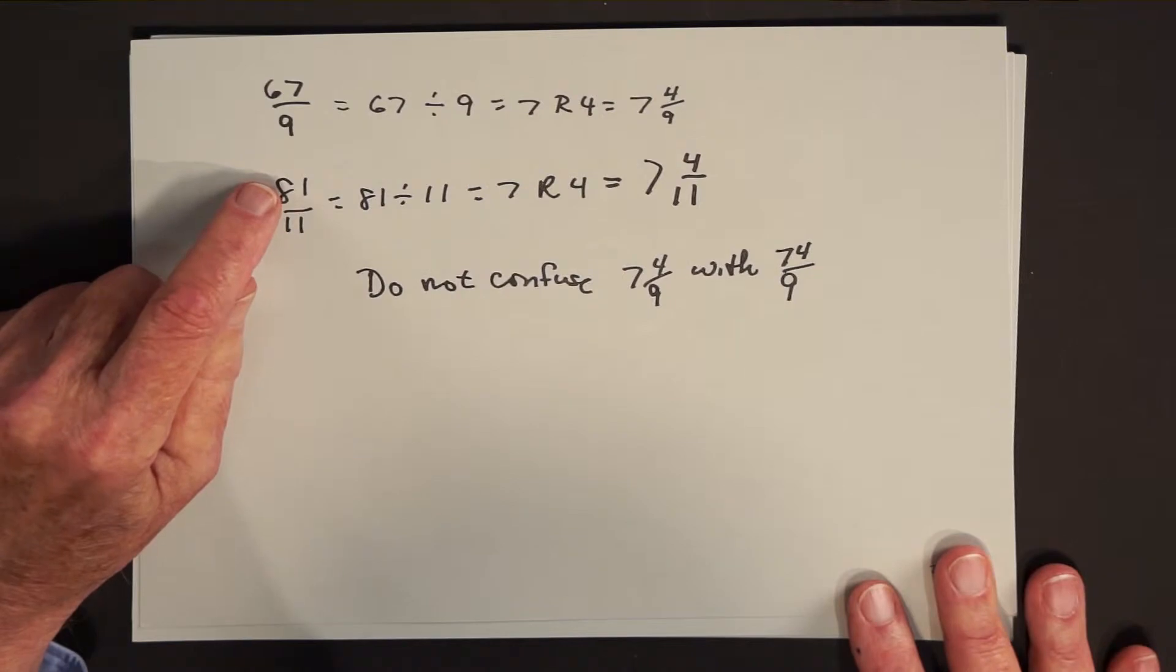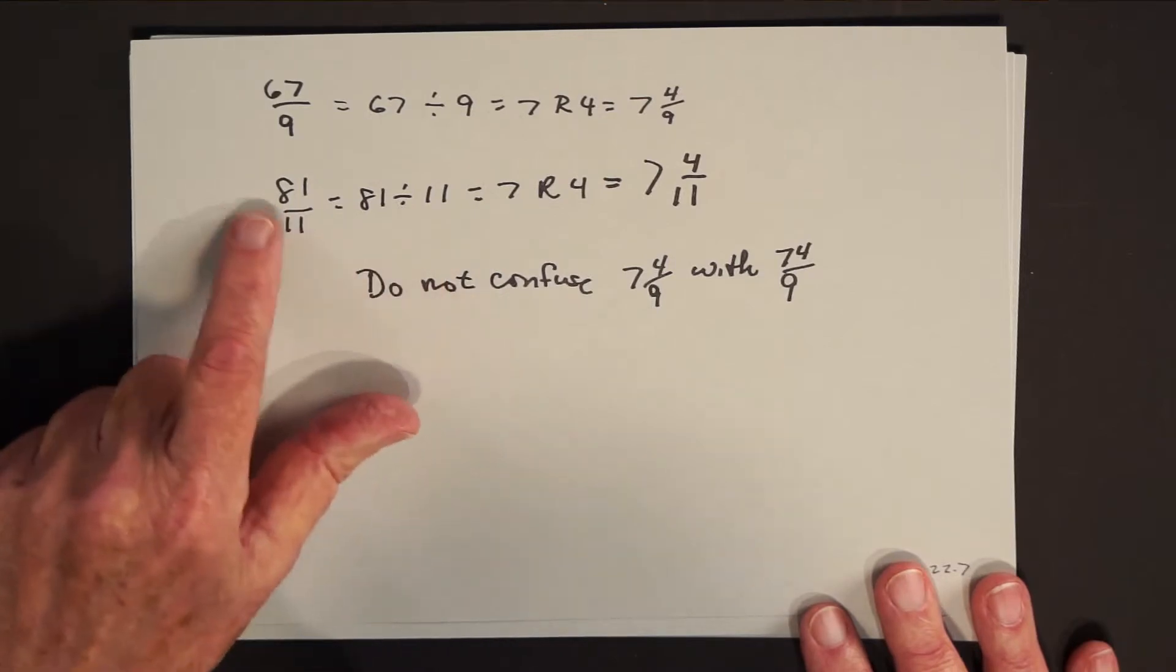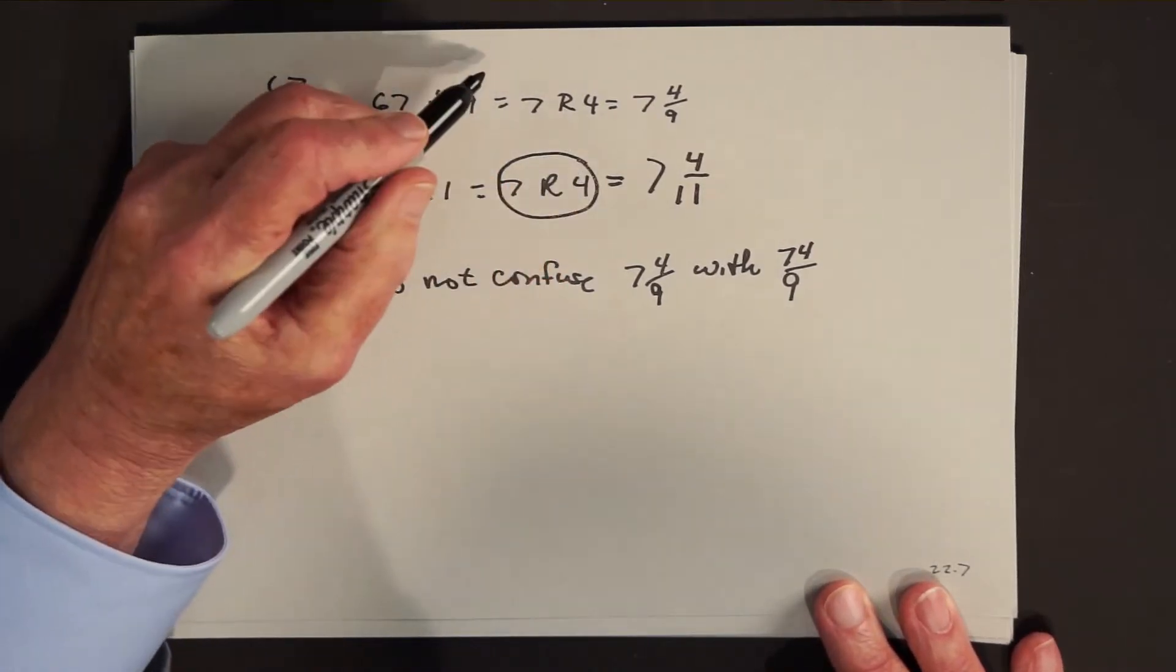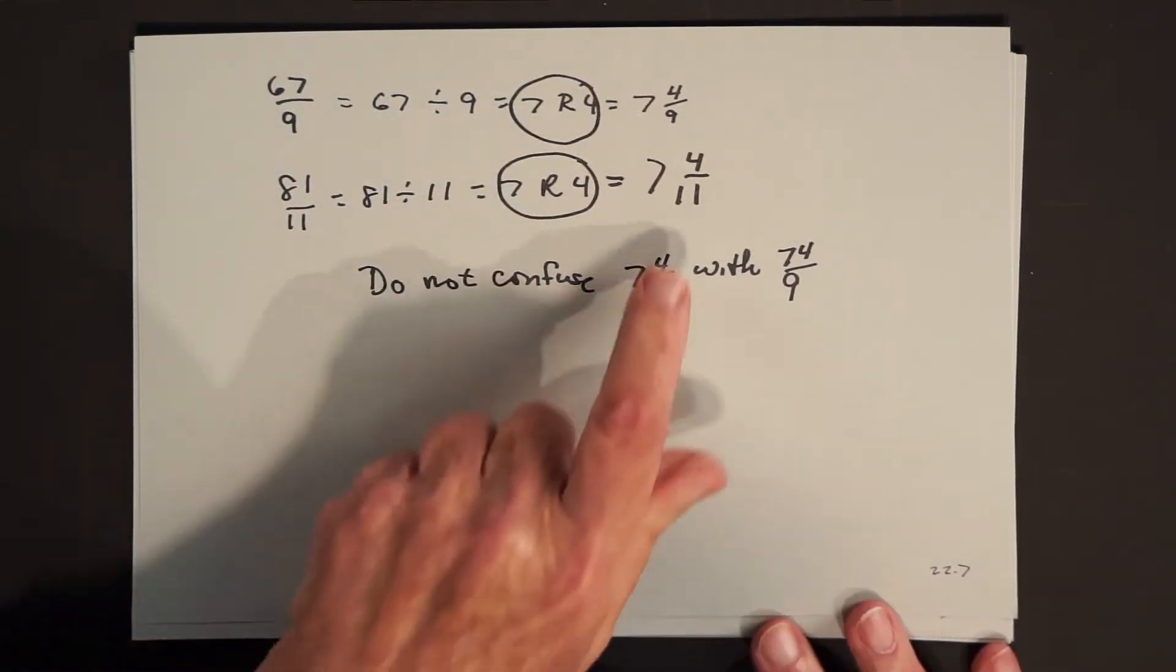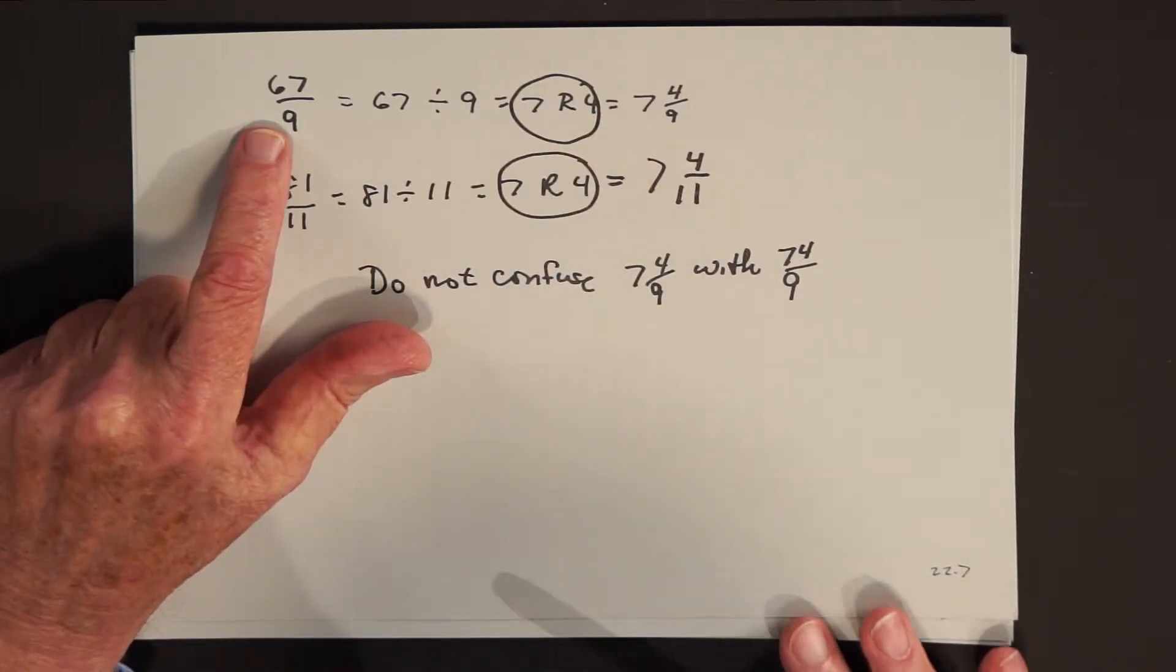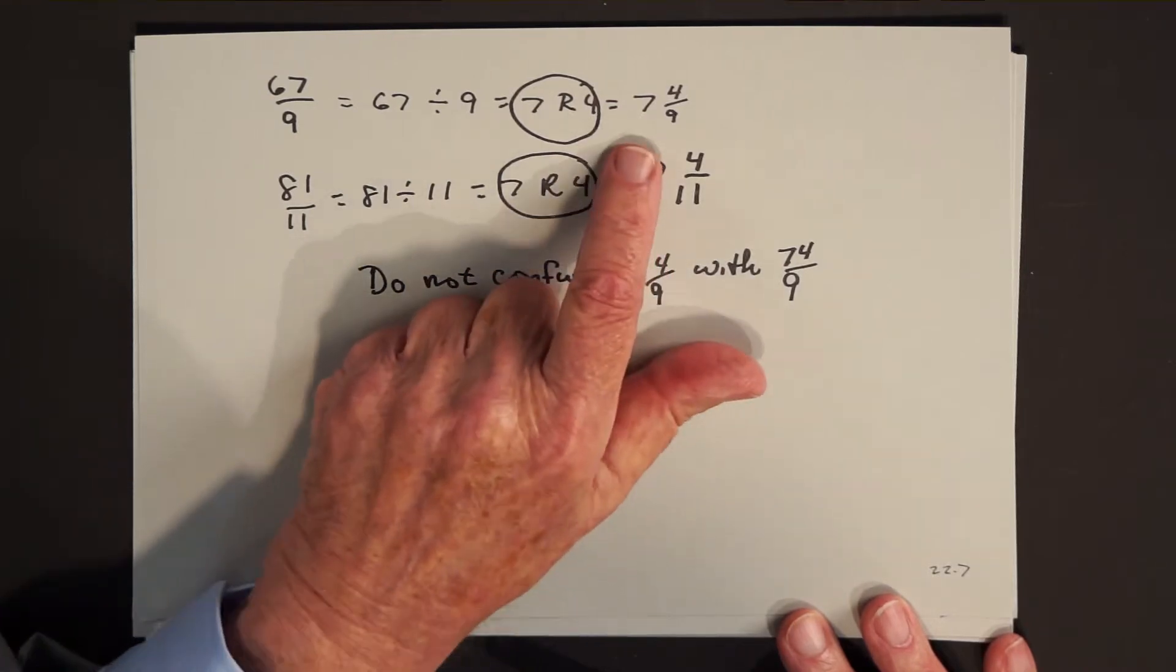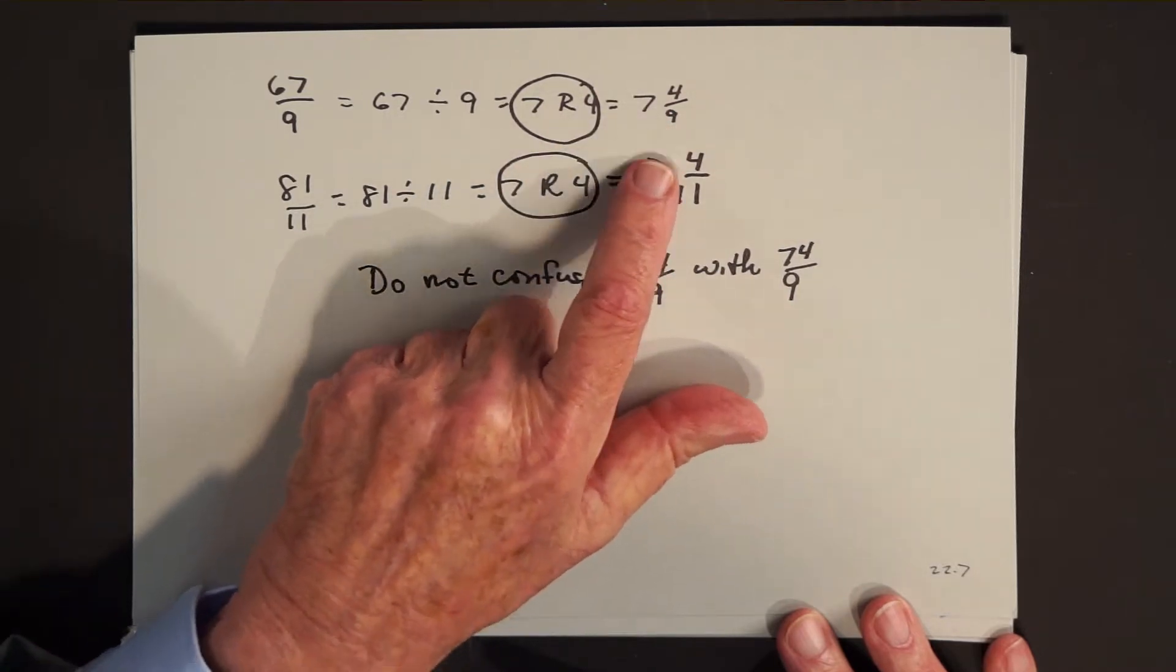Be careful. What if I wrote 81 over 11 as a mixed number? I would now divide 81 by 11. 11 goes into 81 seven times with a remainder of 4. I get the same answer here as I get here. But these are not the same. The reason being that the remainder of 4 here is based on the entire unit being 9, and the 4 here is based on the entire unit being 11.